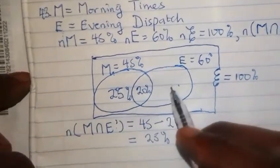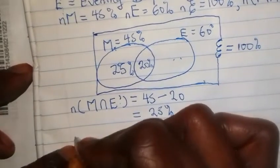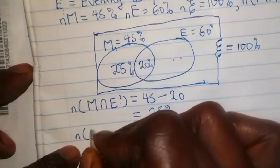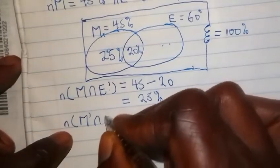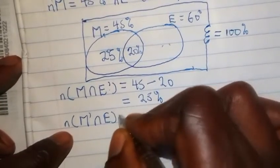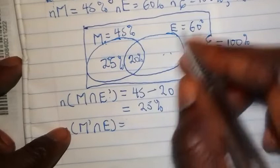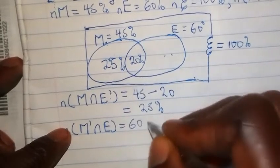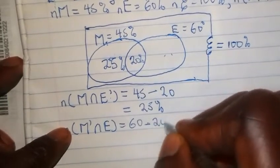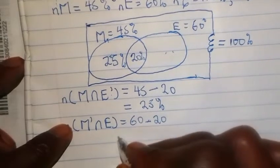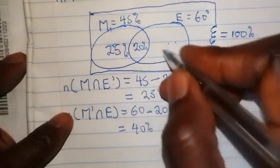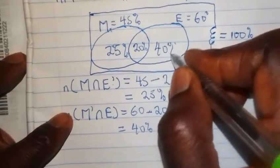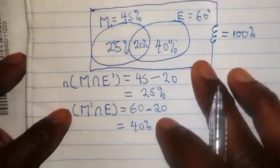So 25 percent read only Morning Times, and we write that in the left region of the diagram. We do the same for those who read only the Evening Dispatch: 60 minus 20 gives us 40 percent. We write 40 percent in the right region of the diagram.